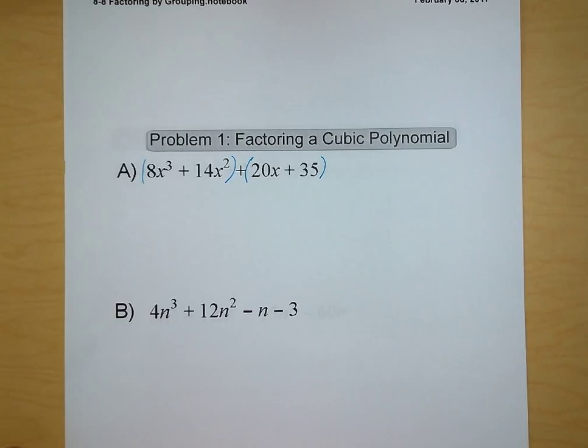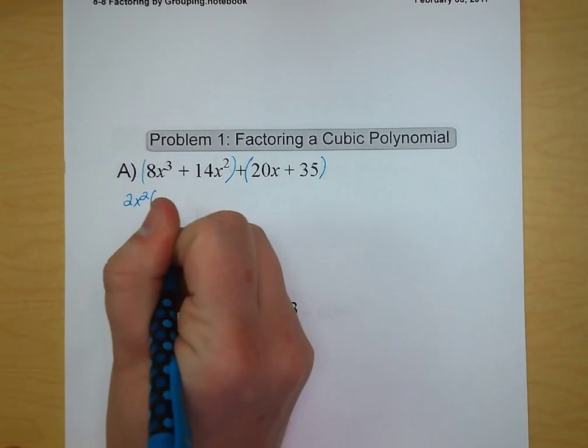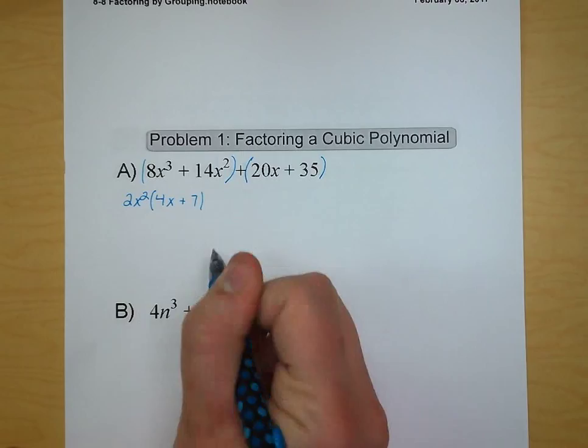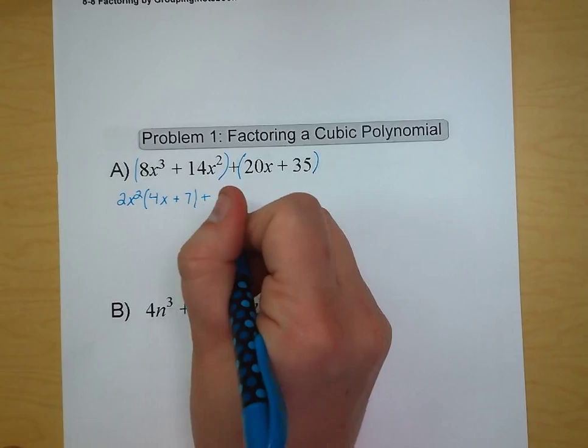Inside each of these pieces there are common factors that we can remove. As I look at 8x cubed and 14x squared, I see that I can factor out an x squared and a 2. So we're going to put 2x squared on the outside, and inside the parentheses what remains is 4x plus 7. Now in our second set of factors we have 20x and 35. I can factor a 5 out of that, so we factor out 5 and we're left with 4x plus 7.